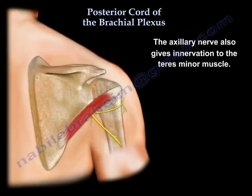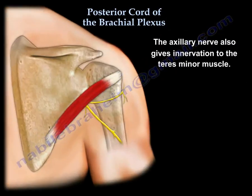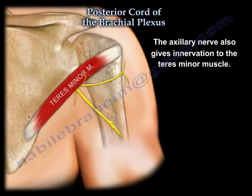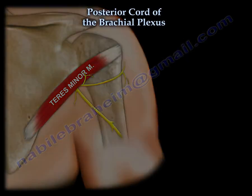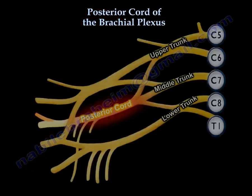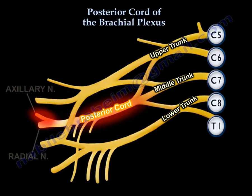Remember, the axillary nerve also gives innervation to the teres minor. So the radial nerve and the axillary nerve are the two terminal branches of the posterior cord of the brachial plexus.